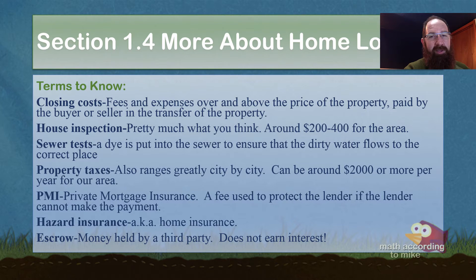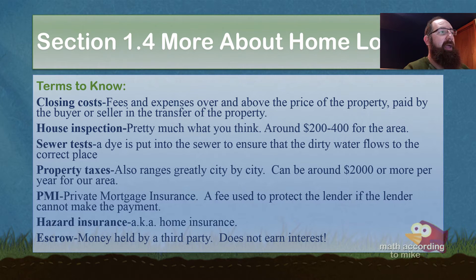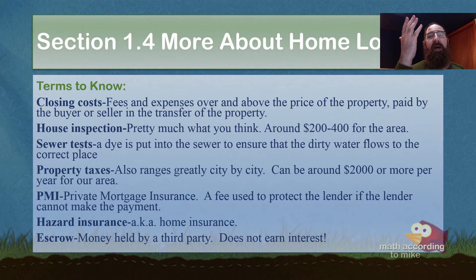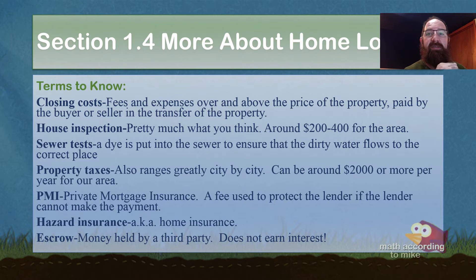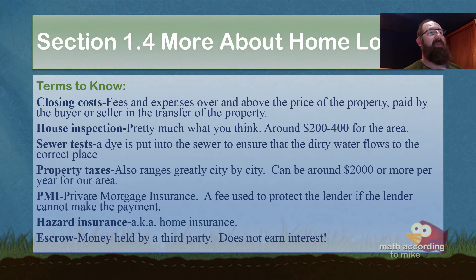The home inspector will not tell you to buy the house or not — that's not their job. Their job is just to prepare you for what is wrong with the house. That can also affect closing costs. If you have a list of 10 things that need to be repaired, you can tell the seller to repair them or pay closing costs. And closing costs are expensive — like $5,000 or $6,000, depending on the area and whether you have real estate agents.